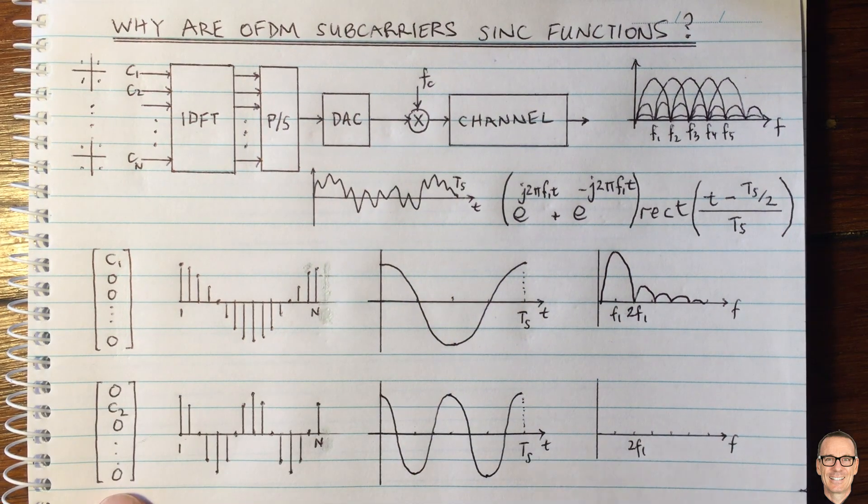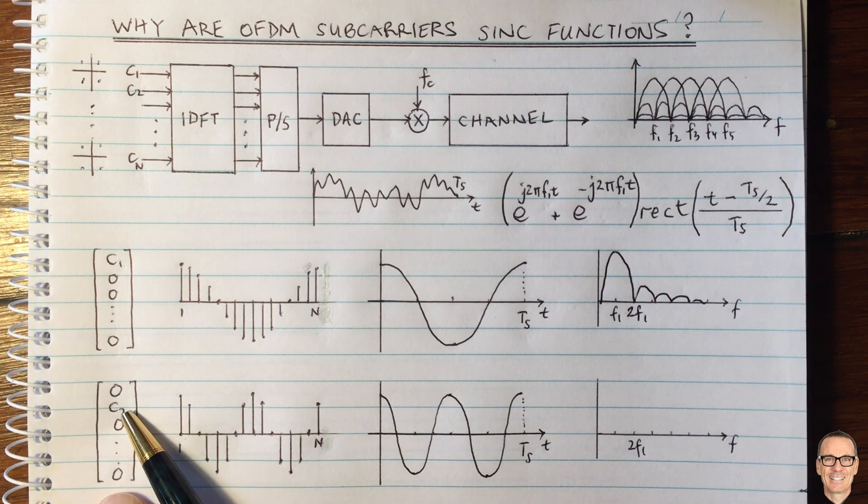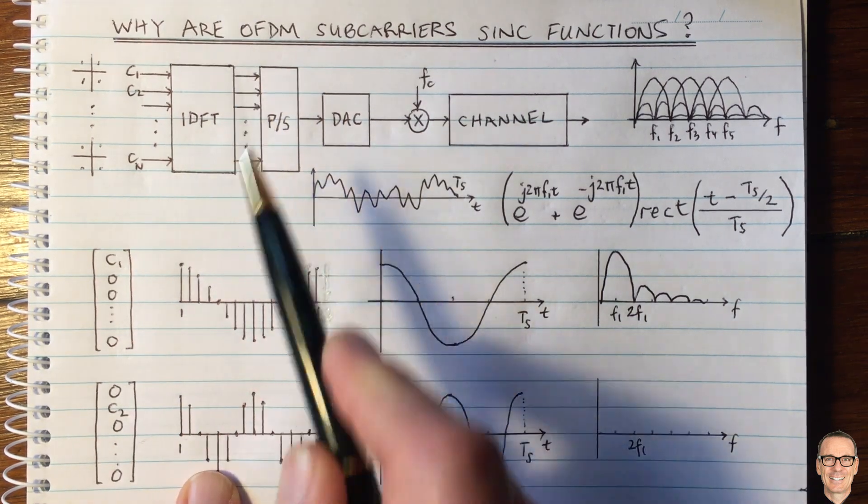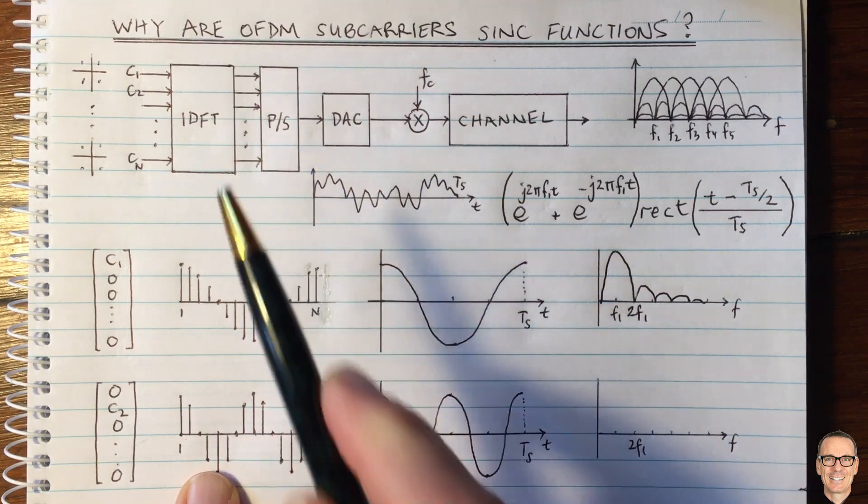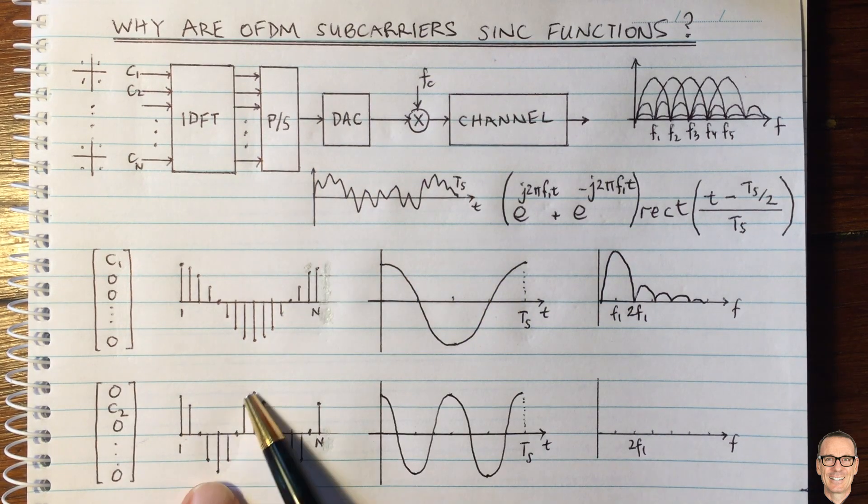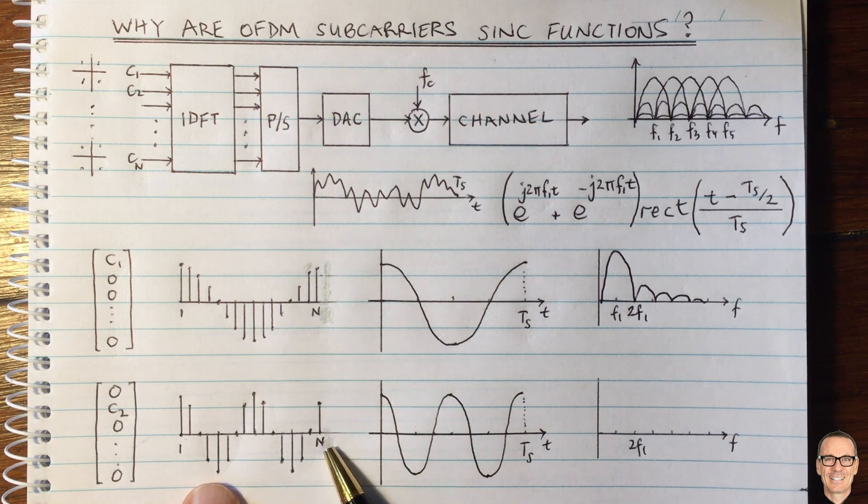And this is the second element. The output of the IDFT is going to be a sinusoidal waveform at twice the fundamental frequency. So now we can see two cycles within the period of capital N.